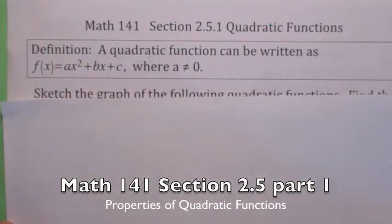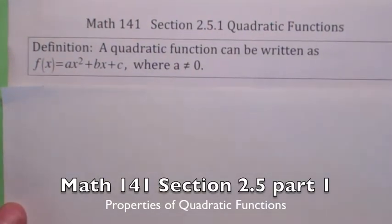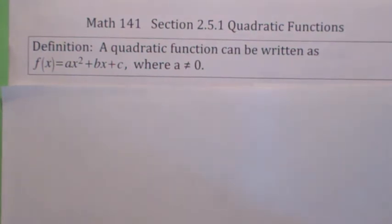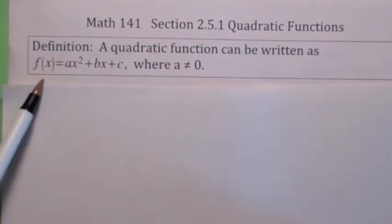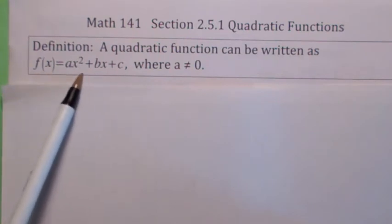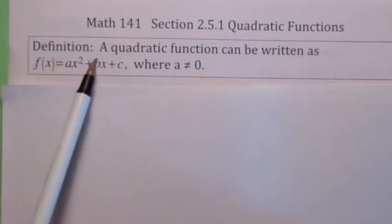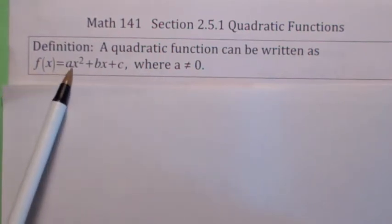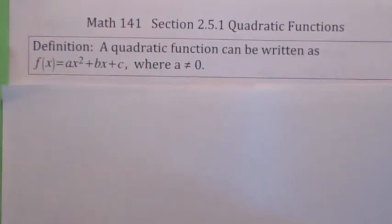Welcome to section 2.5. We're going to focus our attention on quadratic functions here, looking at their graphs. The definition is a quadratic function is any function that can be written in this form, where the leading coefficient — the coefficient of x squared — can't be zero. Otherwise it would be a linear function.